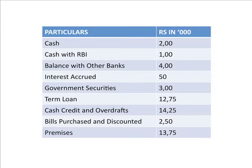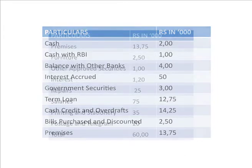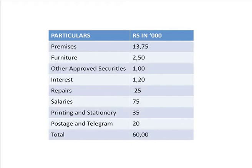Cash credit and overdrafts 14,25,000, bills purchased and discounted 2,50,000, premises 13,75,000, furniture 2,50,000, other approved securities 1 lakh, interest 1,20,000, repairs 25,000, salaries 75,000, printing and stationery 35,000, and postage and telegram 20,000. Together the total is 60 lakh for the debit side.